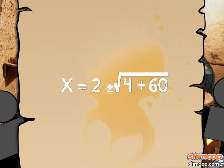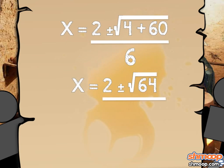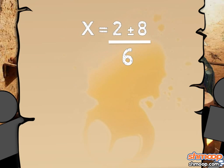This simplifies to 2 plus or minus the square root of 4 plus 60 over 6. Furthermore, this simplifies to 2 plus or minus the square root of 64 over 6. The square root of 64 is 8.